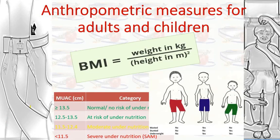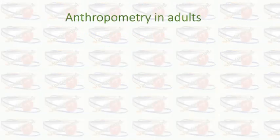Hello, how are you? In this session I am going to discuss about the anthropometric measurement methods for adults and children. We will see one by one what are these methods, how we will measure them, and what are the cut-off points at what level we can say that the adult or child is undernourished or overnourished. Let's start from the adults.